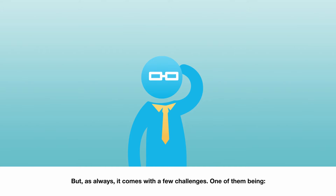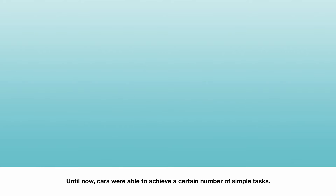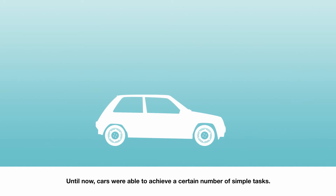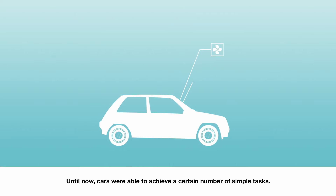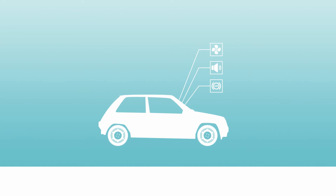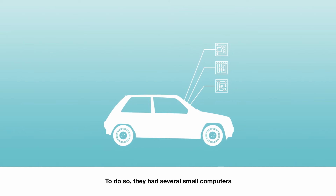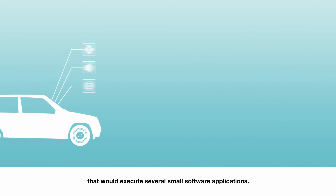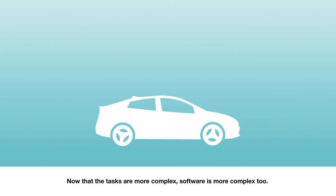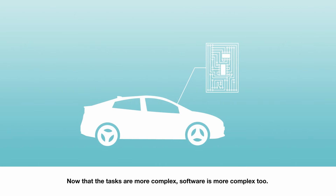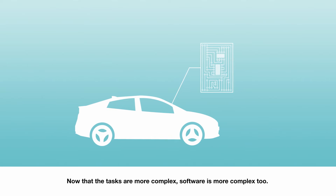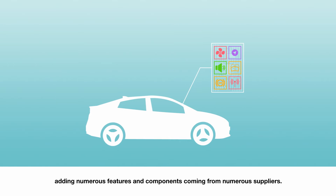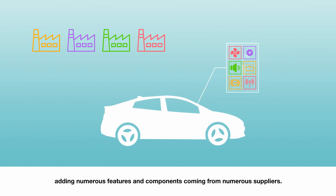But as always, it comes with a few challenges. One of them being: how do we do it? Until now, cars were able to achieve a certain number of simple tasks. To do so, they had several small computers that would execute several small software applications. Now that the tasks are more complex, software is more complex too, adding numerous features and components coming from numerous suppliers.